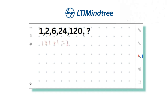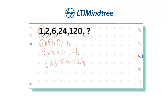Let's find a different representation. We can write: 1 plus 1 equals 2; then 2 multiplied by 2 plus 2 equals 6; then 6 multiplied by 3 plus 6 equals 24. The pattern is: each term multiplied by an incrementing number, plus the same term. So 24 multiplied by 4 plus 24 equals 96 plus 24, which is 120. This confirms the pattern.